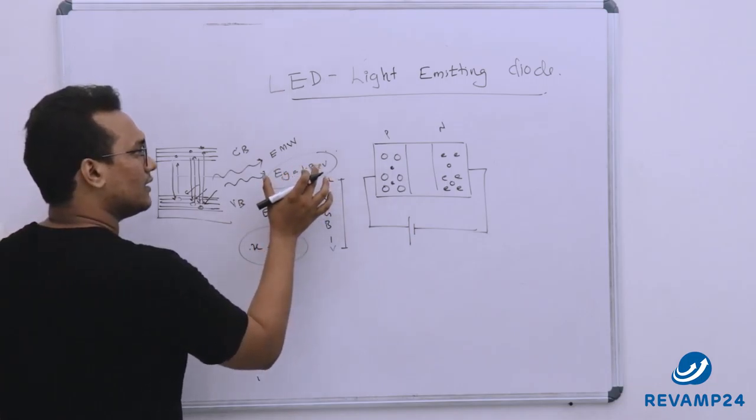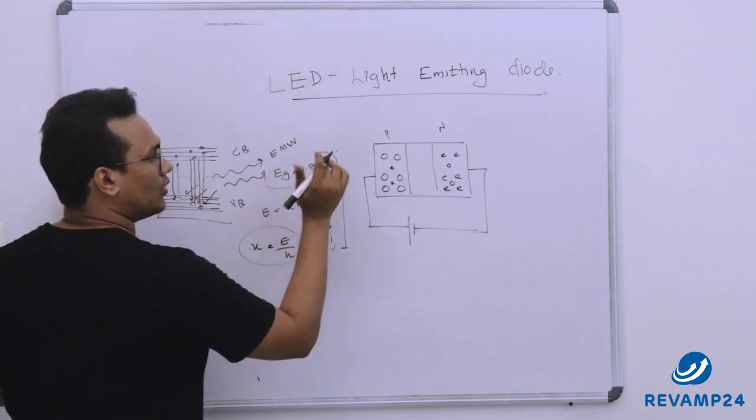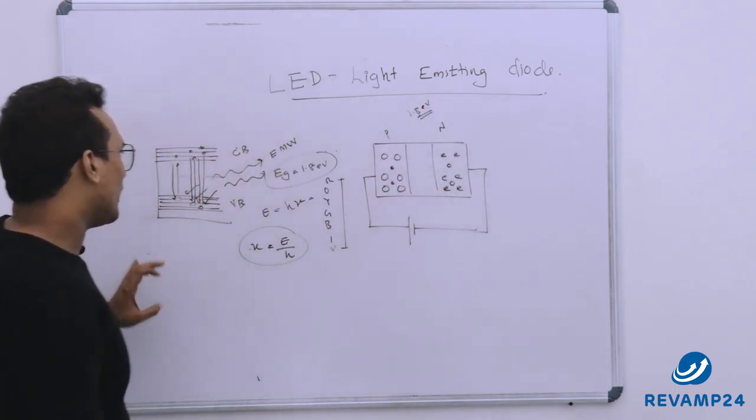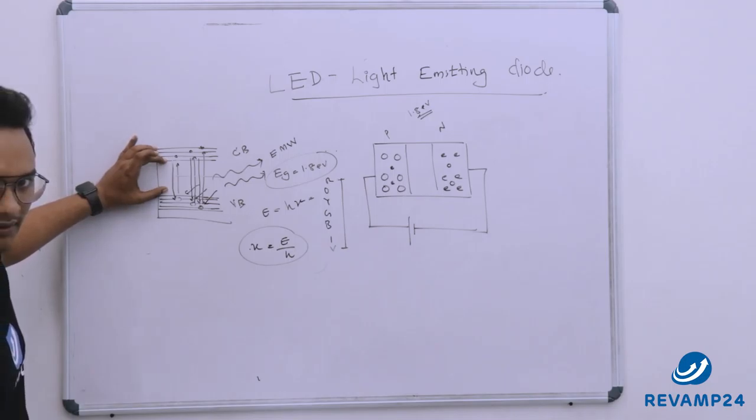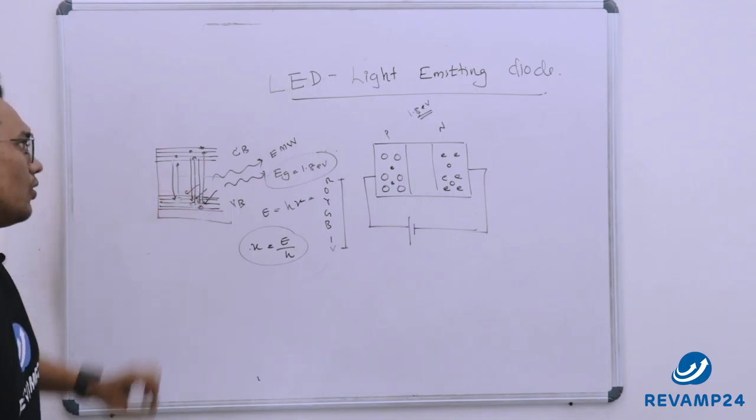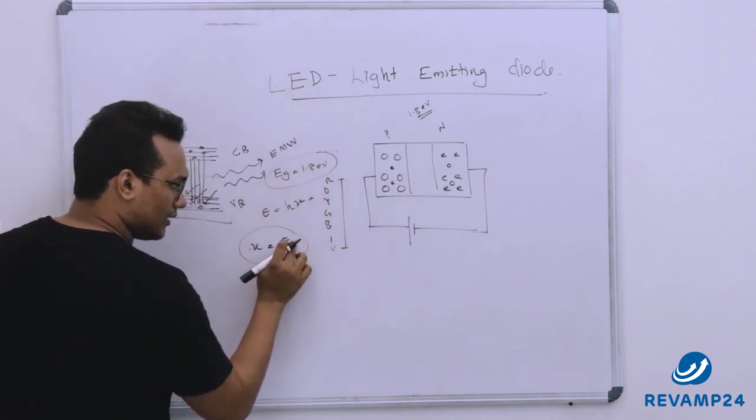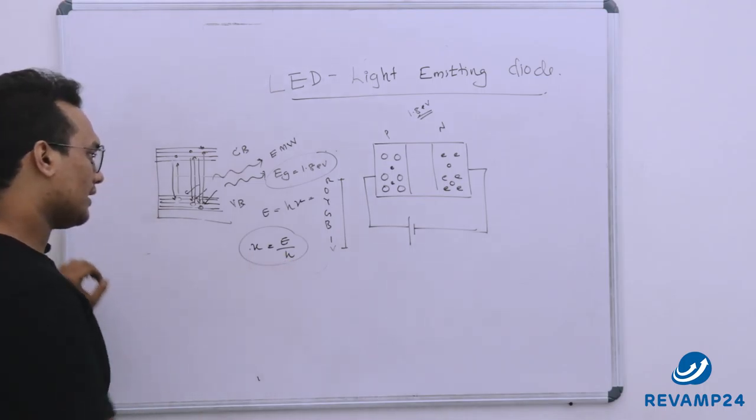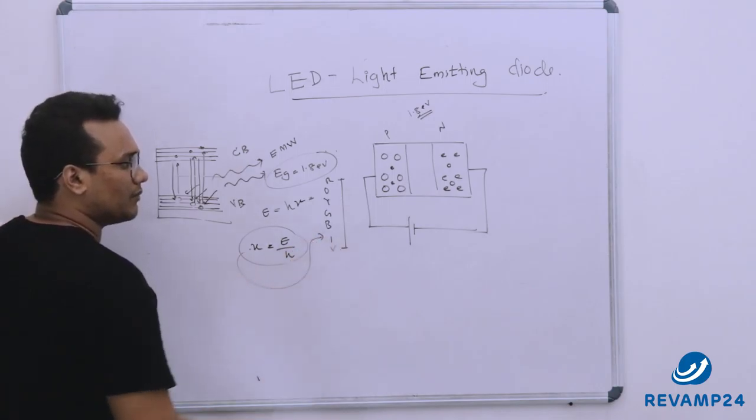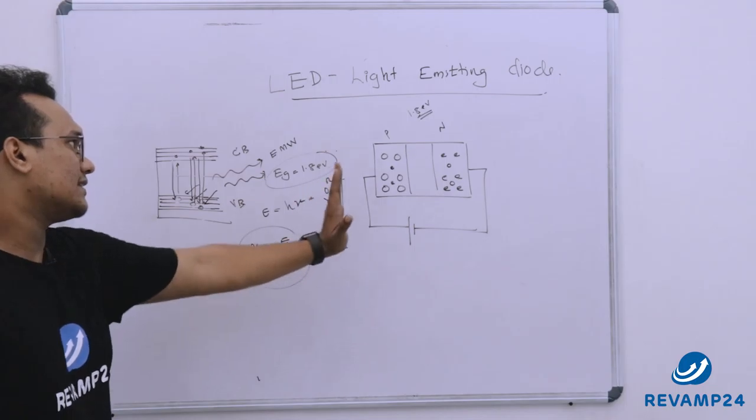That is the reason we have chosen a material having an energy gap equal to 1.8 electron volt. Because when the energy gap is 1.8 electron volt then whenever the electron comes down and recombine with the hole the emitted energy would be 1.8 electron volt and we can substitute the value here with Planck's constant here. Then the frequency would be found out as matching with the visible spectra.